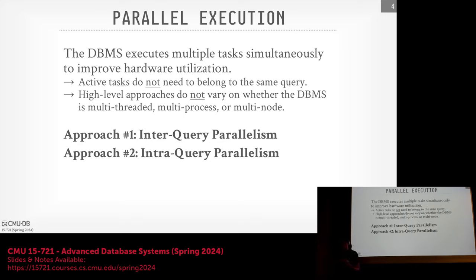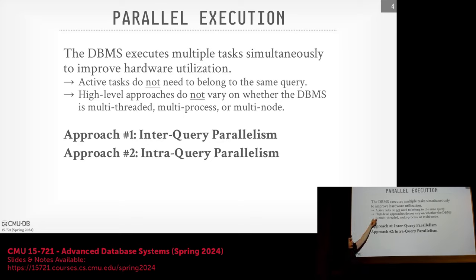Another question: doesn't network latency add a big issue? Not really nowadays — networks are really fast, especially in the same rack. The CPU is often going to be the bottleneck; in the last two or three years things have flipped. So the high-level approaches we're talking about today aren't going to matter whether it's multi-threaded, multi-process, or multi-node.